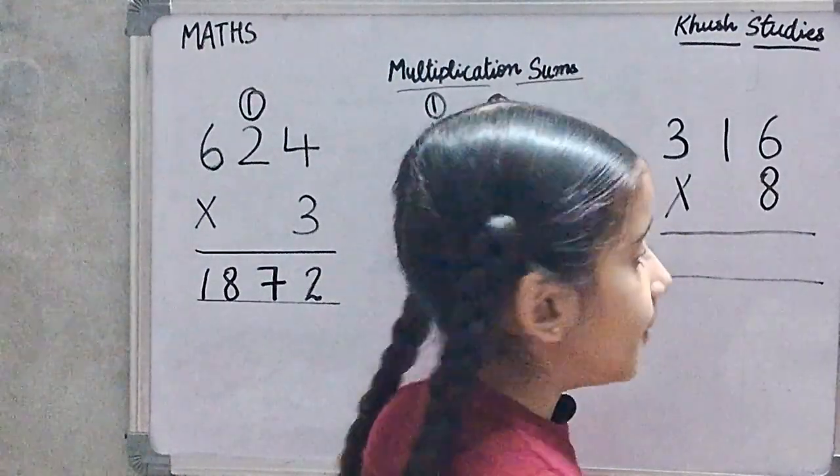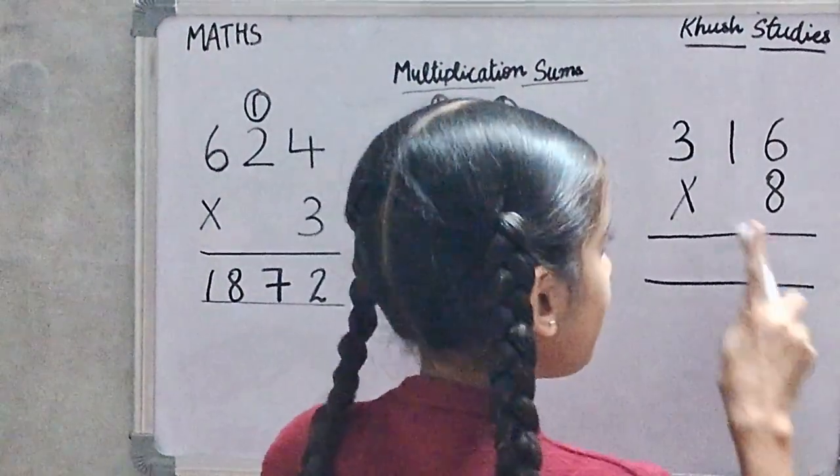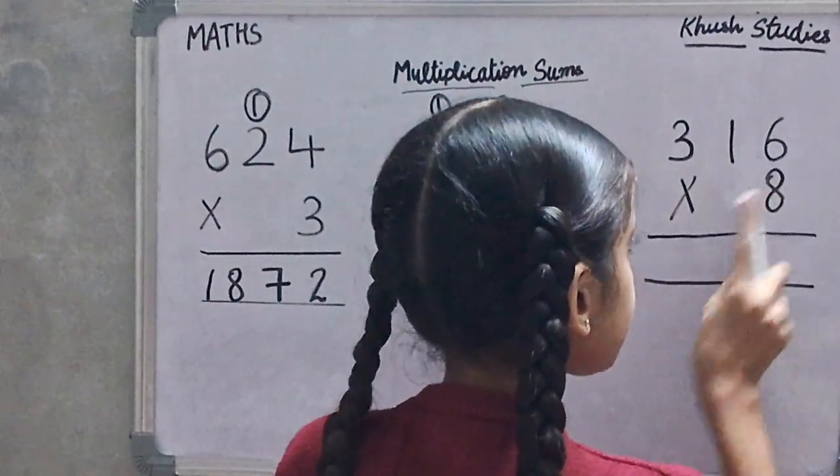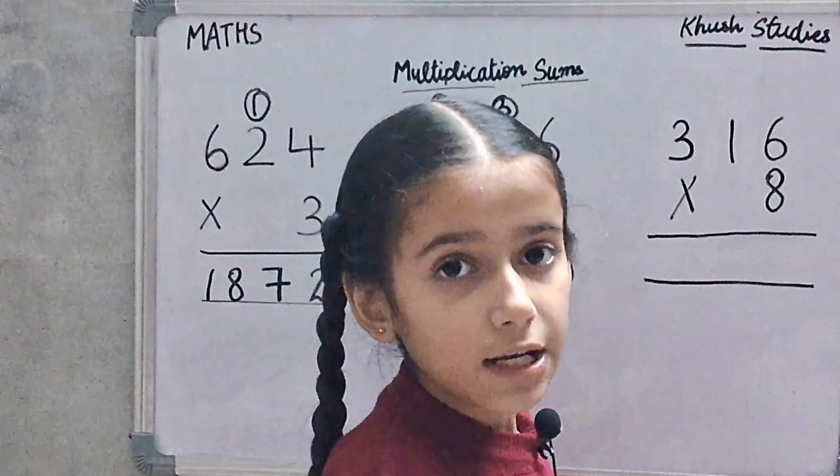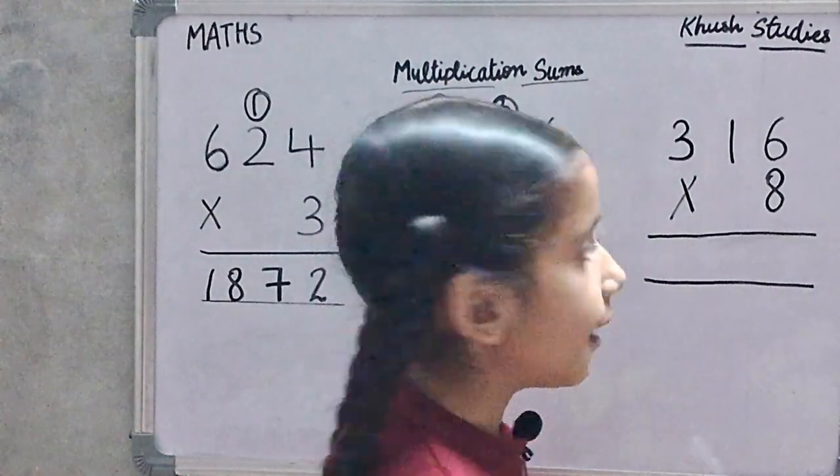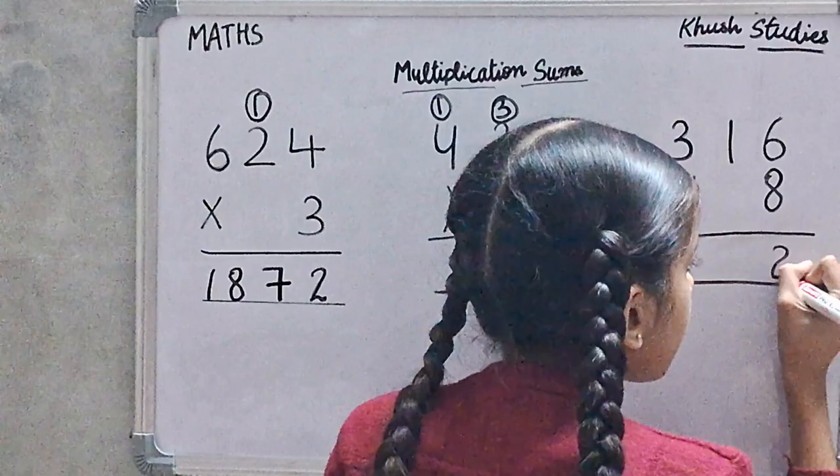Now we will multiply 316 multiply by 8. First we will multiply 6 by 8. 8 times 6 is 48.